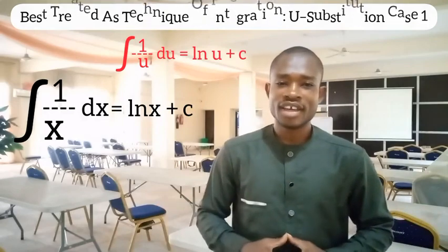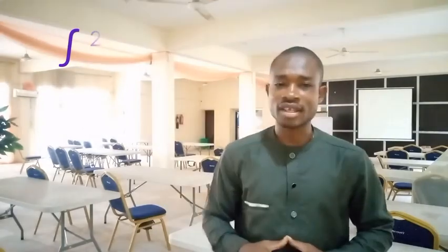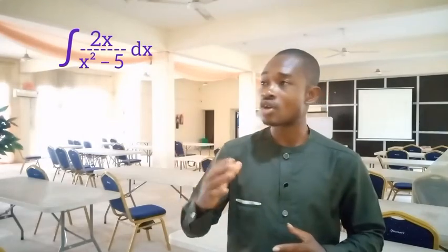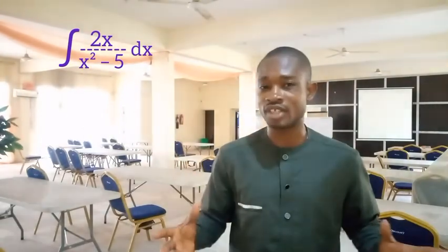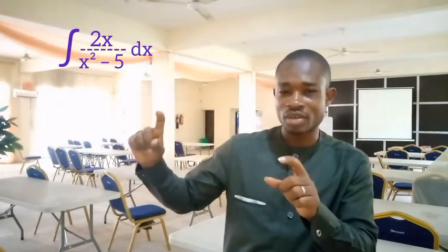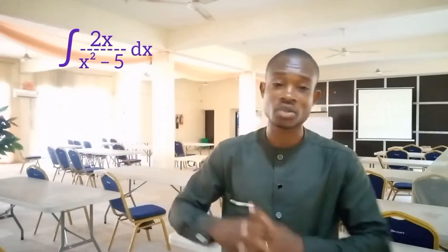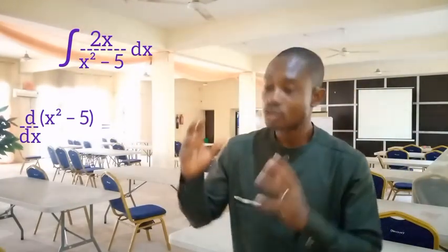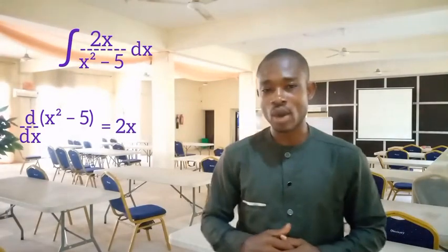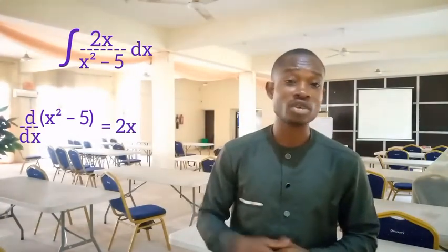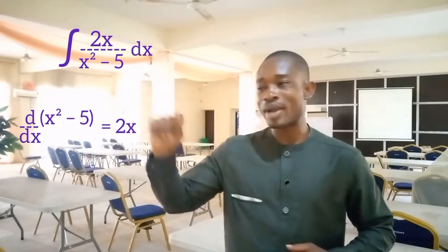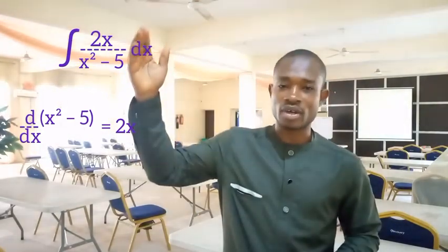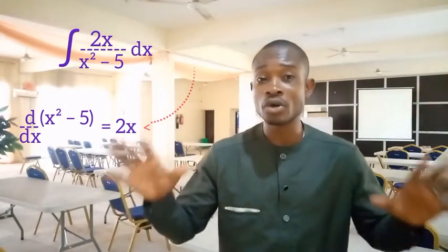As a quick example, if I have the integral of 2x over x squared minus 5 dx, all I have to do is differentiate the denominator x squared minus 5 with respect to x. The derivative of x squared is 2x, and differentiating the constant minus 5 gives 0. So the derivative of the denominator x squared minus 5 is 2x. Now check the numerator — what you have there is also 2x.